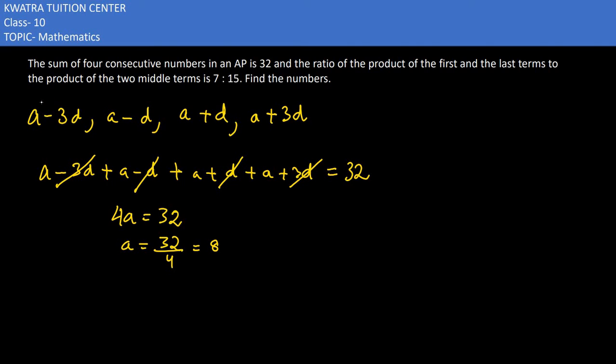The ratio of the product of the first and the last term to the product of the two middle terms. This means first and the last term product is a minus 3d and a plus 3d. And it is equivalent to what value? 7 by 15.